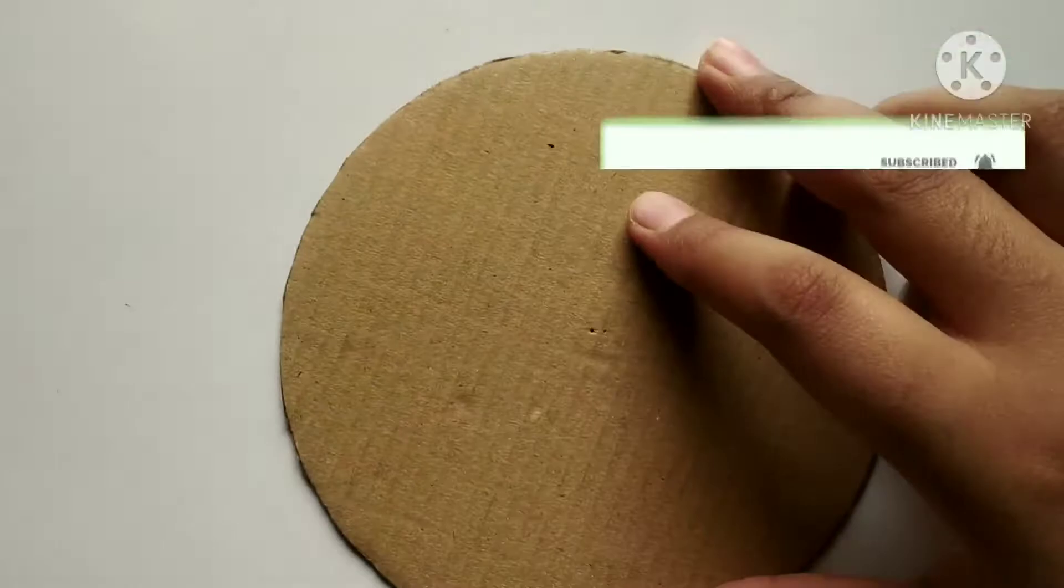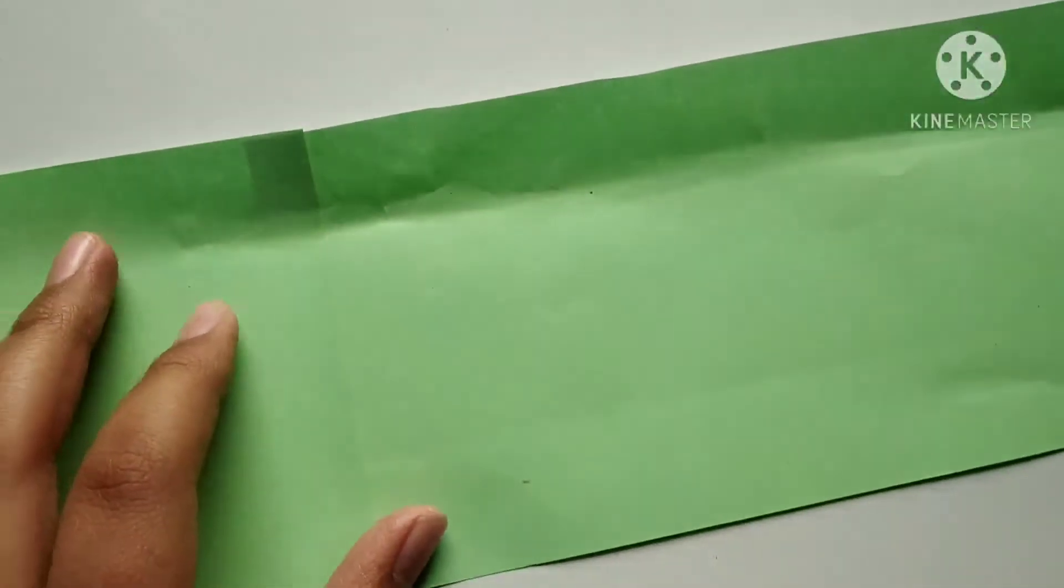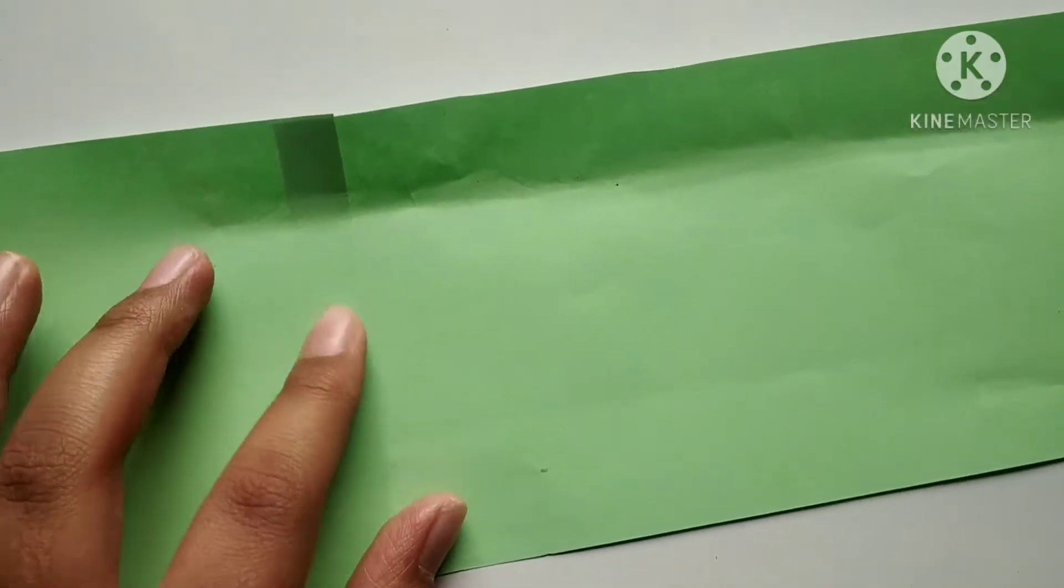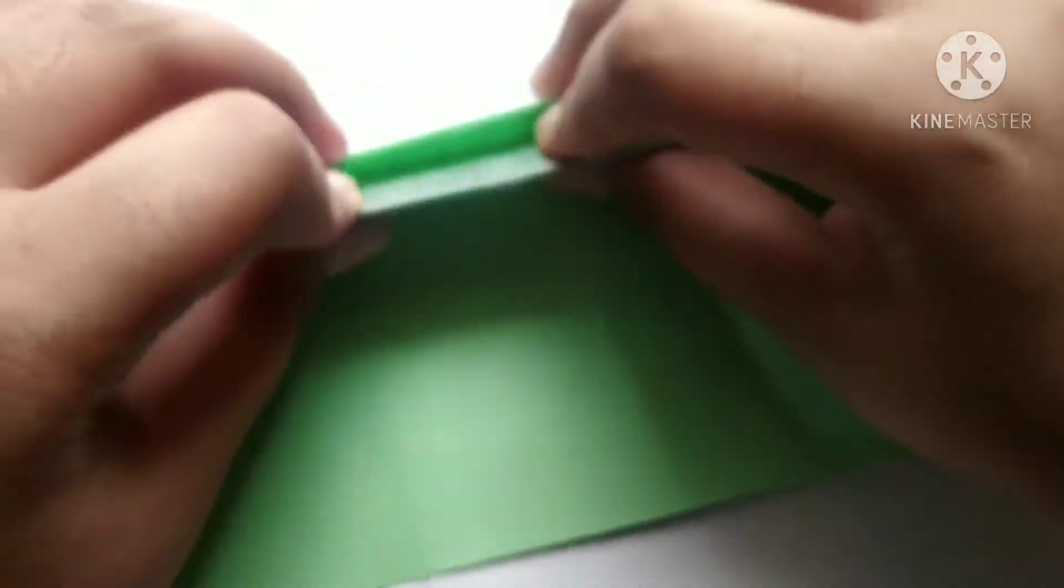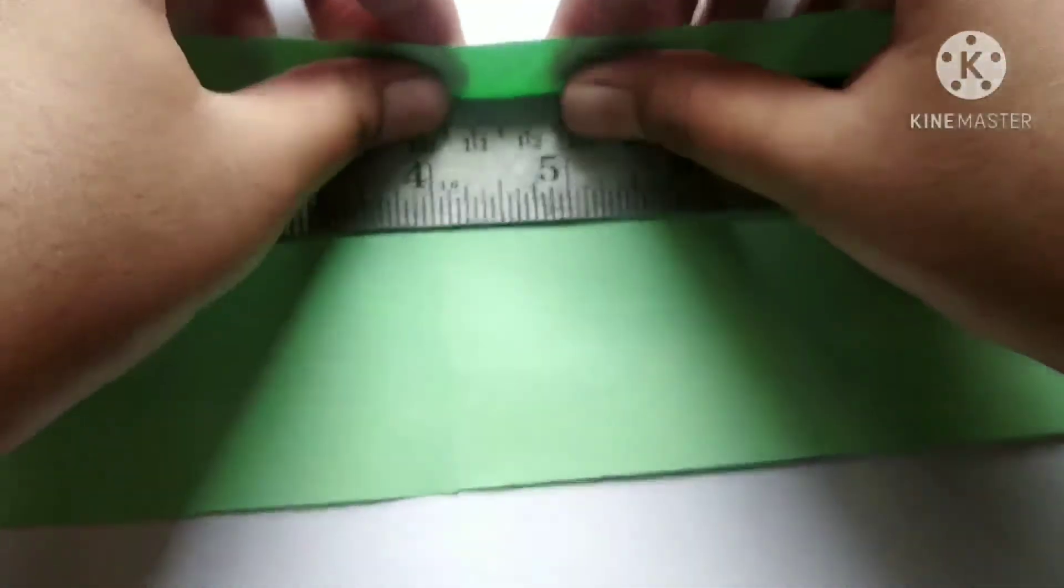For making an origami cake, we need to take a circle cardboard and keep it. Now we need to take a strip paper, take a scale, and fold this with the scale.